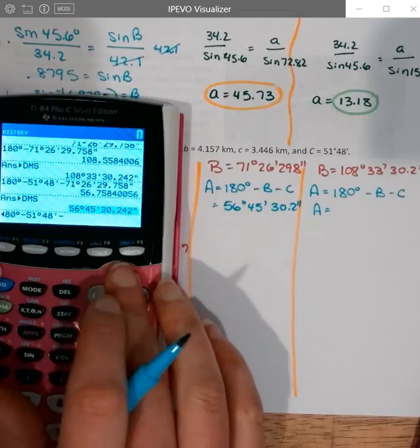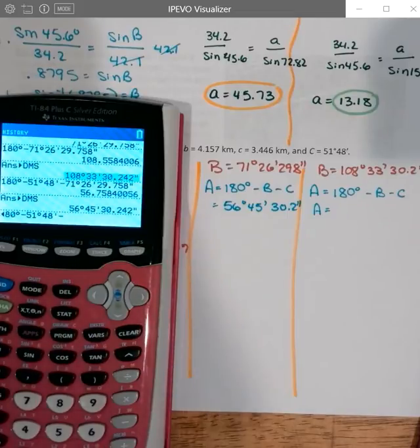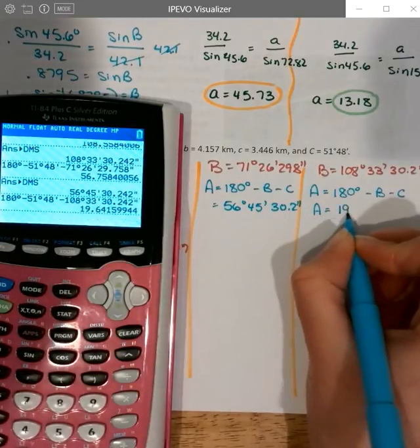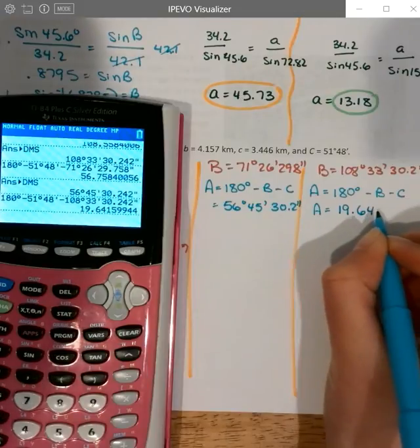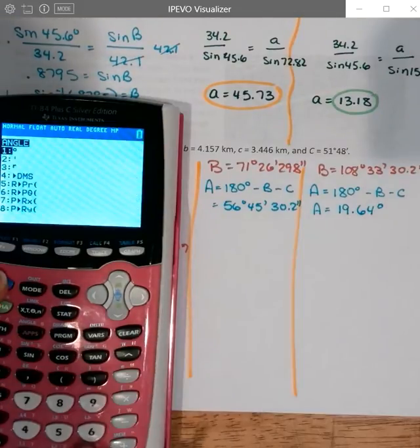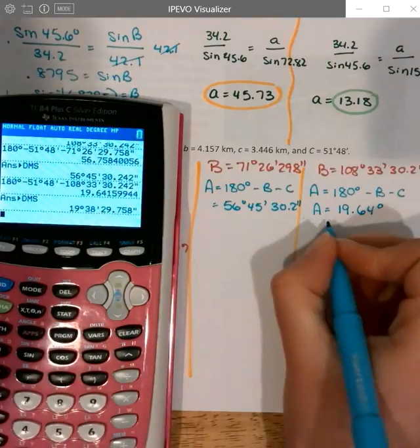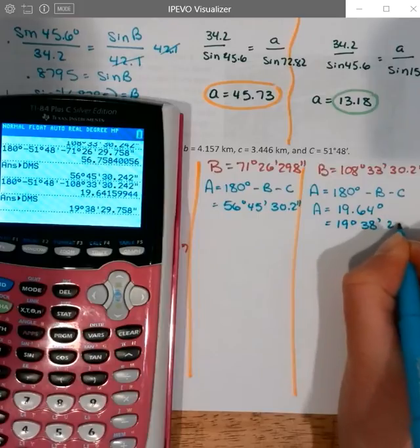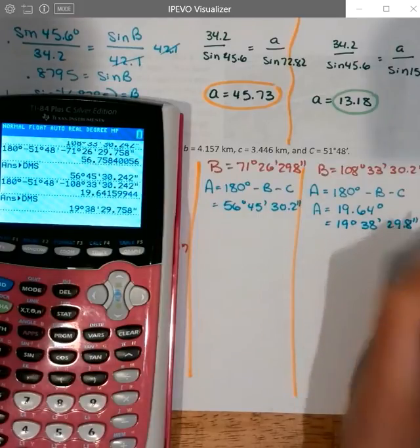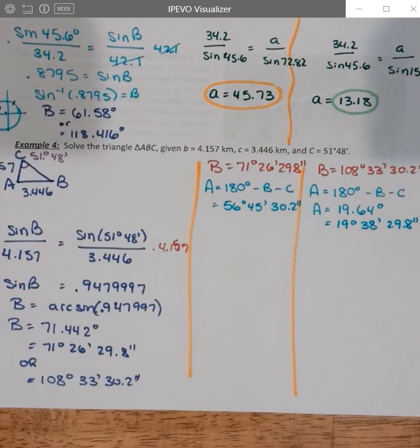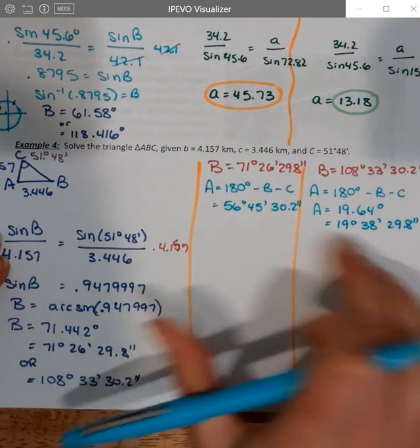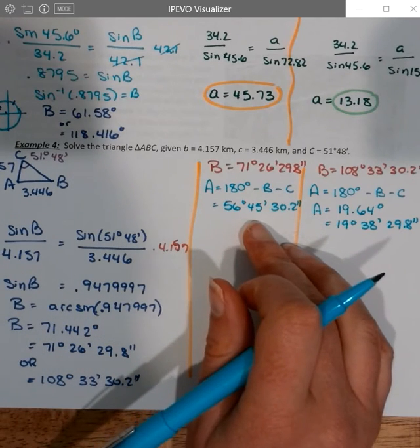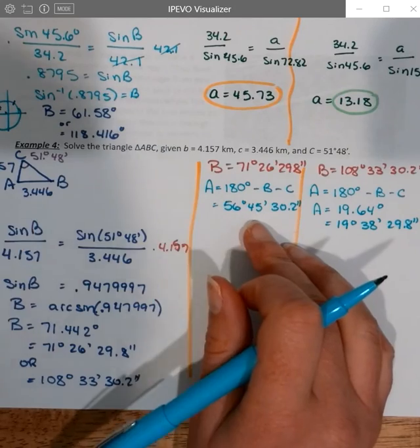Or instead of subtracting the angle B that's 71 degrees, etc., I can subtract the angle B that is 108 degrees, 30 minutes, etc. And so this gives me an angle A of 19.64 degrees. Oops. Forgot to convert it into DMS. So in DMS, that would be 19 degrees, 38 minutes, and then 29.8 seconds. Okay. So two choices for A now. And so let's go ahead and find our, we already know little B and little C, so find our little A.